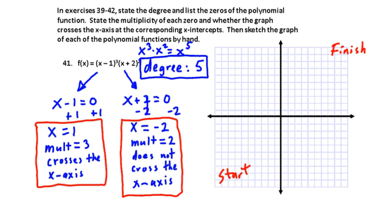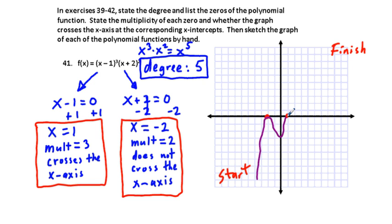We mark our real zeros at x equals negative 2 and x equals 1. Starting from the lower left, the graph comes up toward x equals negative 2. Since the multiplicity there is 2, it does not cross — it just touches and bounces back. Then the graph must finish high, so it comes back down and at x equals 1 with multiplicity 3, it crosses the x-axis with a sideways jog, then goes back up.